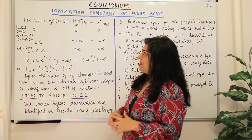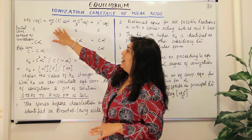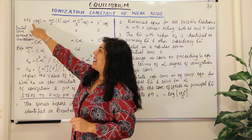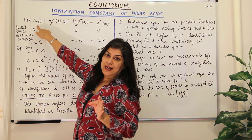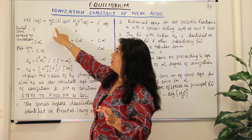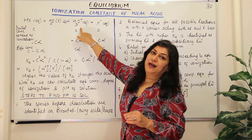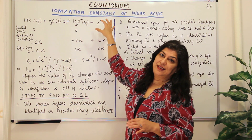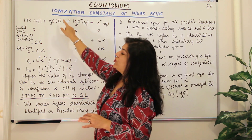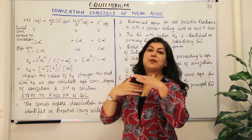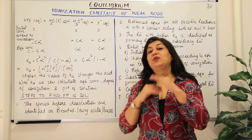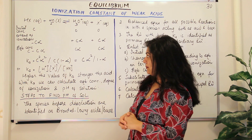Let us start with an equation assuming that HX is a weak acid which partially dissociates in water to give us hydronium ion and X negative. The double arrow shows that an equilibrium has been established and the reaction is proceeding in both directions.